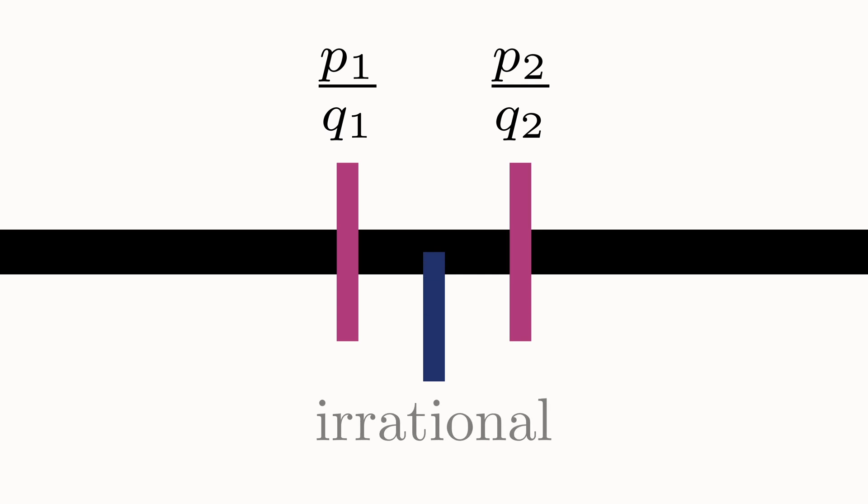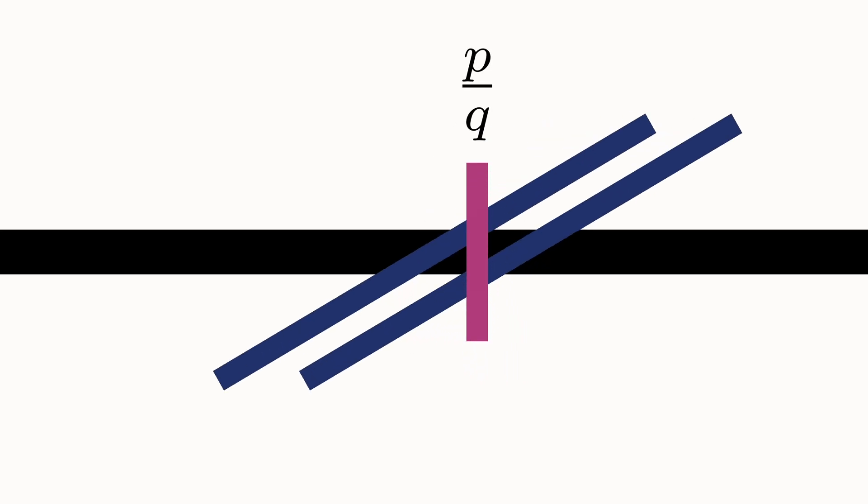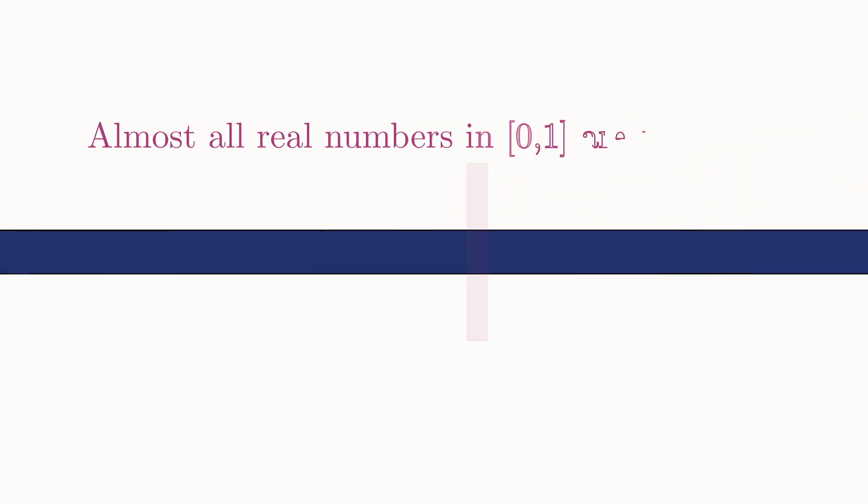Between any two rational numbers, you can always find an irrational number. And between any two irrational numbers, you can always find a rational. Yet still, the unit interval consists almost entirely of irrational numbers.